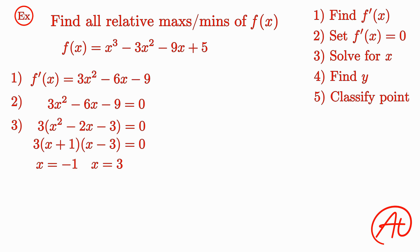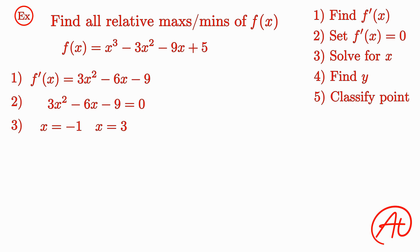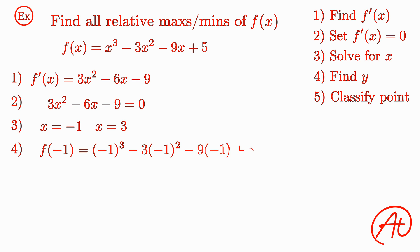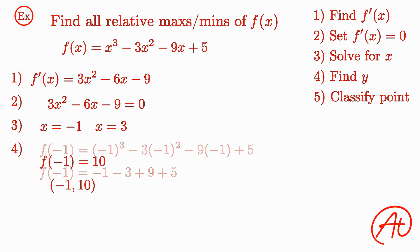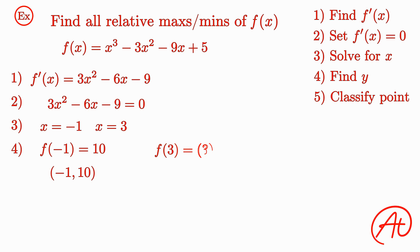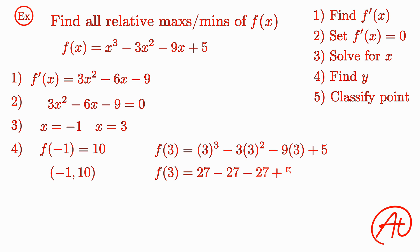This time we have two points to find and classify. Let's first find the y-value for x equals negative 1. Plugging this into the original f function, we find that our first max or min point is (negative 1, 10). Then, plugging in x equals 3 to f(x), we get that our second point is (3, negative 22).